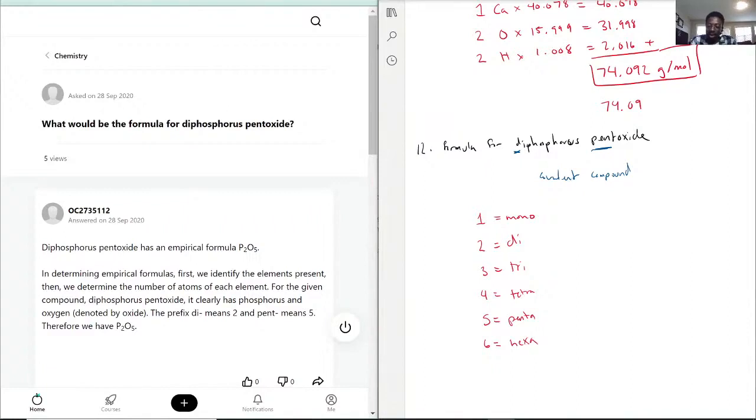Now, using this, we just kind of plug it in, pretty much. So we have diphosphorus, right? So that would be phosphorus two, and pent, as we said, penta, pent oxide. So oxide stands for oxygen. So we have O and five of them. So the formula for diphosphorus pentoxide is P2O5.